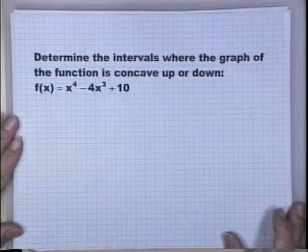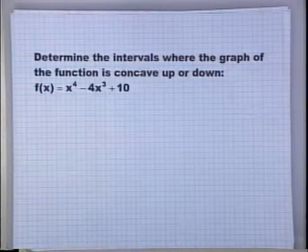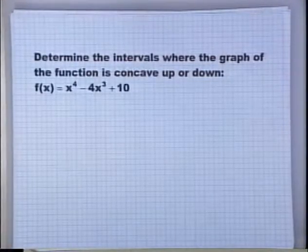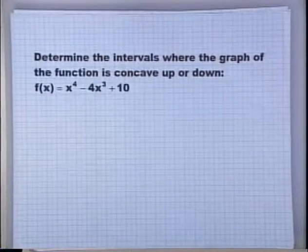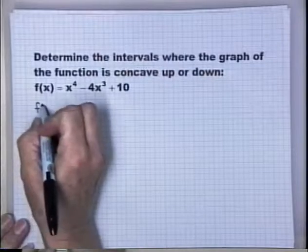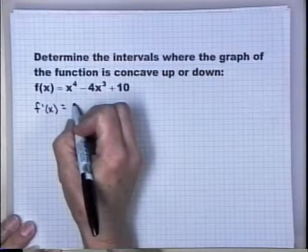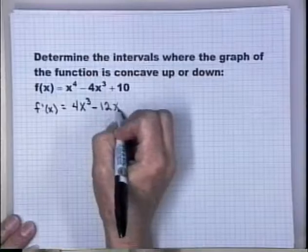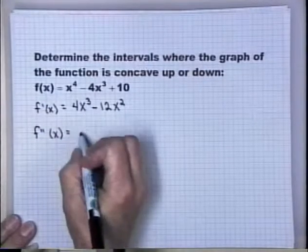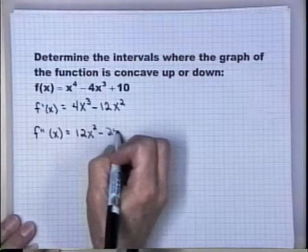Let's determine the intervals where the graph is concave up or down. The first derivative is used to tell where the original function is increasing or decreasing; the second derivative tells us whether the curve is concave up or down. Since we want to know where we're concave up or down, we go to the second derivative. First, we get the first derivative: 4x³ - 12x². Then our second derivative is 12x² - 24x.